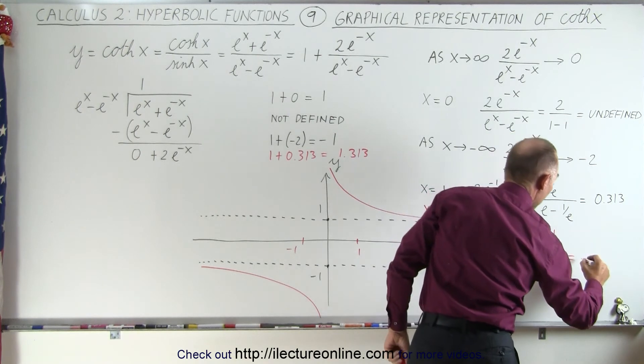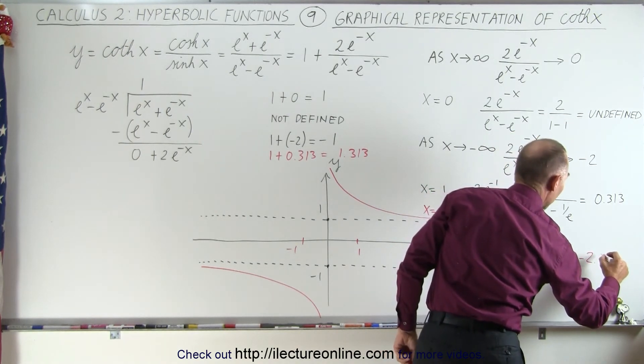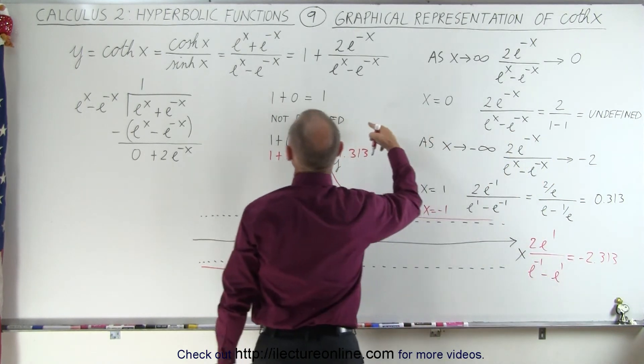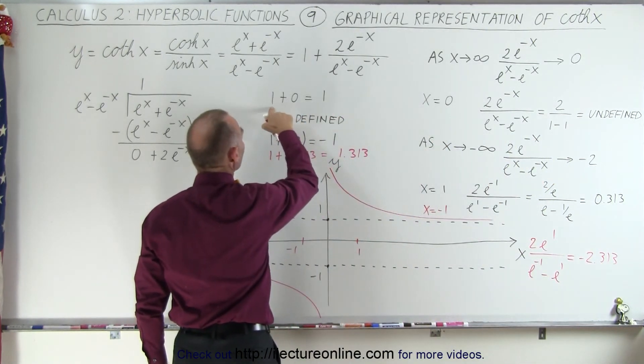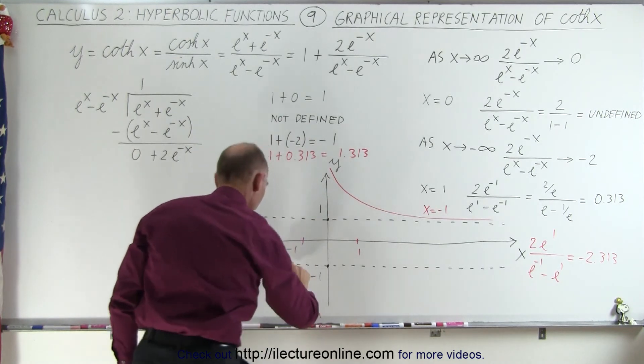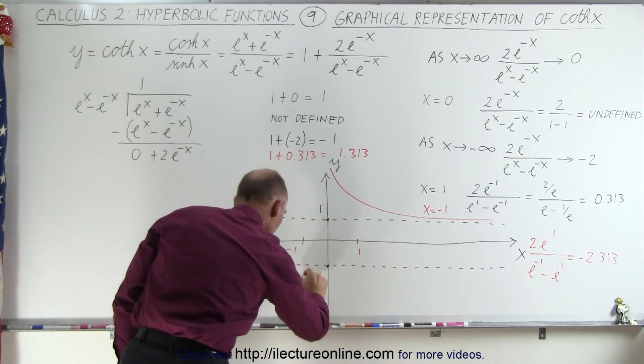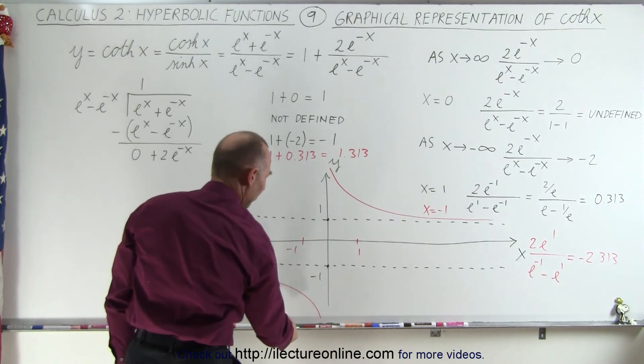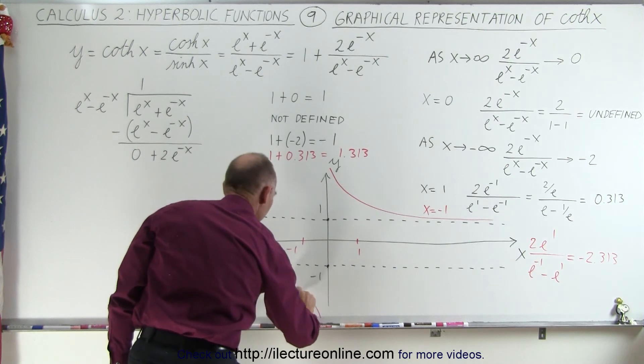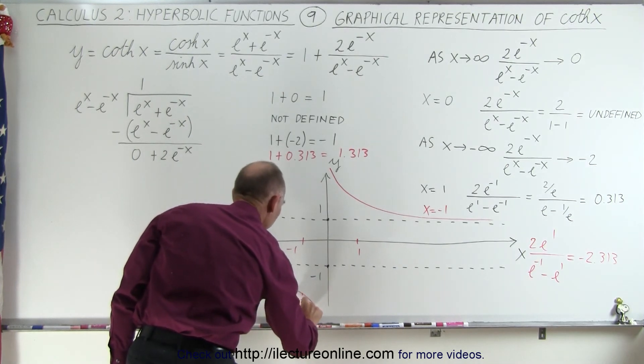This comes out to be minus 2.313. If we subtract that from 1, so 1 plus minus 2.313, we would be below the axis. Of course I exaggerated a little bit, but we end up with a value of minus 1.313.